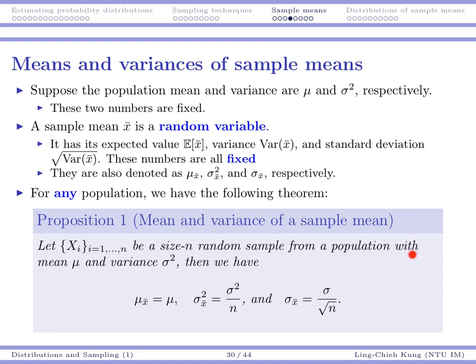Now, we have a very useful and important theorem. For any population, there is the following relationship between the mean and standard deviation of a sample mean and the population. Given a size-n random sample from a population with mean mu and variance sigma squared, as long as I know mu, sigma squared, and n, I can be sure that for my sample mean, the mean is still mu, the variance is the population variance divided by n, and the standard deviation is the square root of the variance of the sample mean.